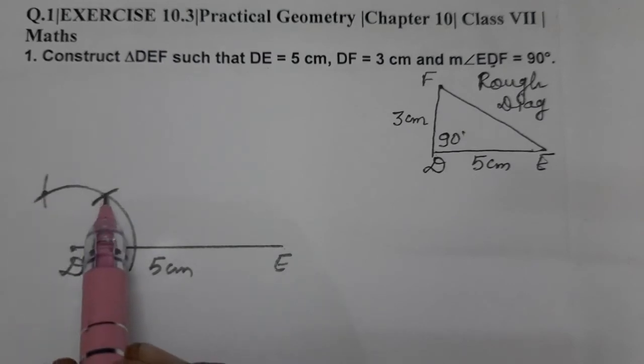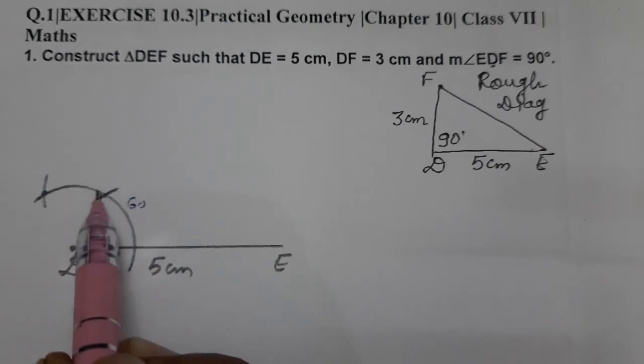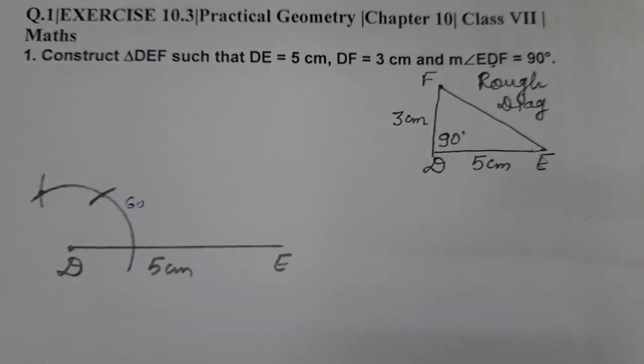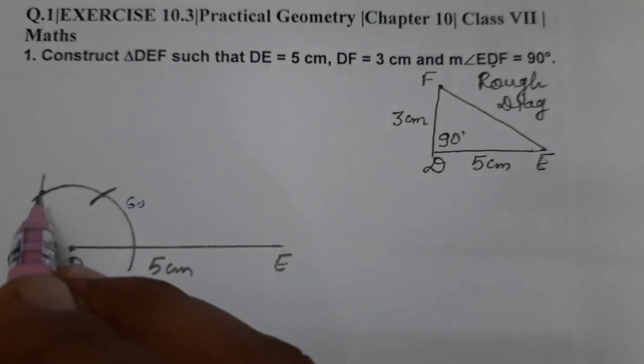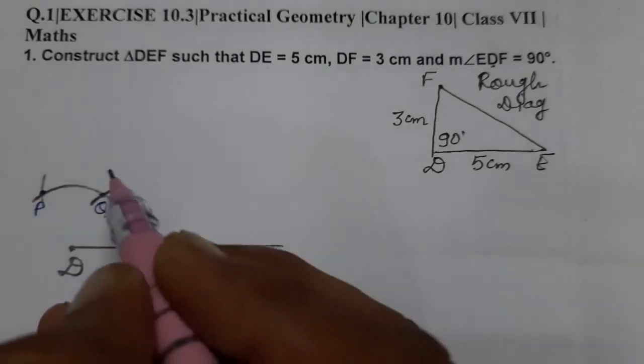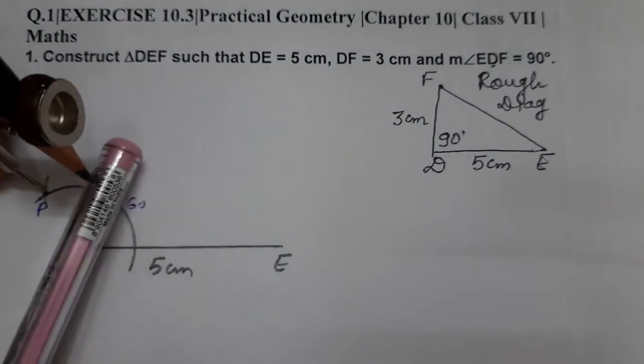Now we are going to bisect these two. If we bisect 60 and 120, we will get 90 because this is 60 and this is 60. If we bisect it, we'll get 30, so 60 plus 30 equals 90. Then we will get 90 degrees. So we are going to bisect these two points. Let's give the name to these points as P and Q. So we are going to bisect PQ.